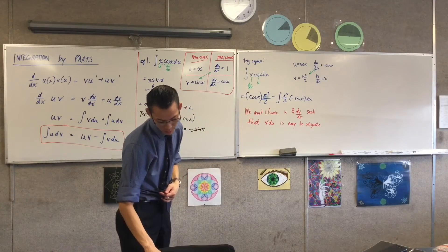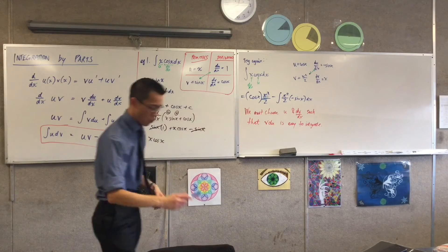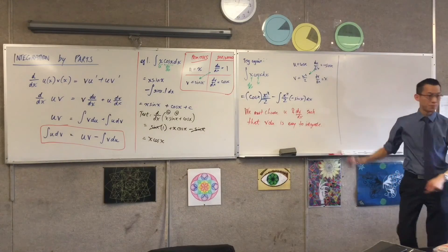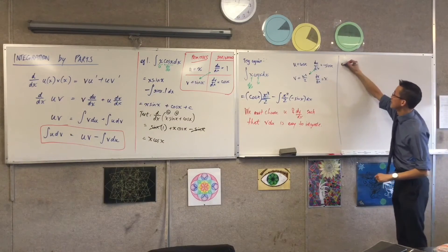So that's an example, example one. That's the first reason why it's not called the reverse product rule. Here's the next reason. Example two.